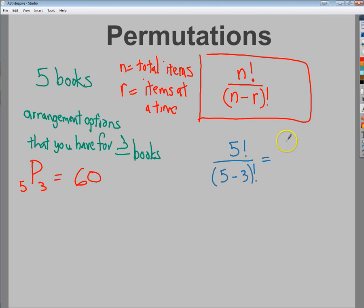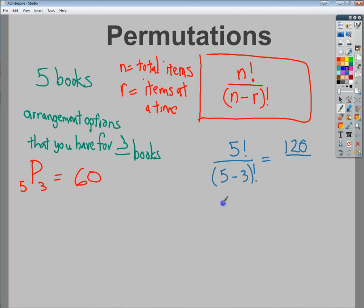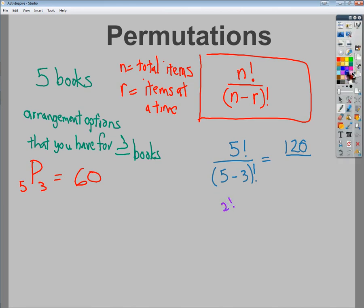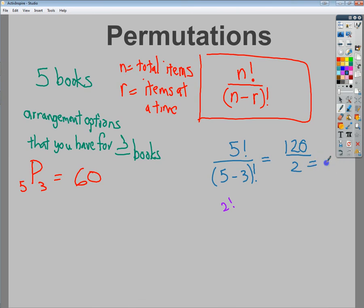So five factorial is 120. Five minus three is two, so it's really two factorial, and two times one is just two. So you get your 60.